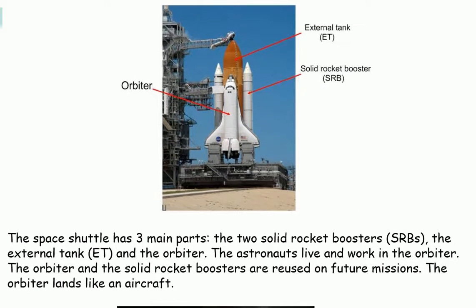The Space Shuttle had three main parts: the two solid rocket boosters (SRBs), the external tank and the orbiter. The astronauts lived and worked in the orbiter. The orbiter and the solid rocket boosters were reused on future missions. The orbiter landed like an aircraft.